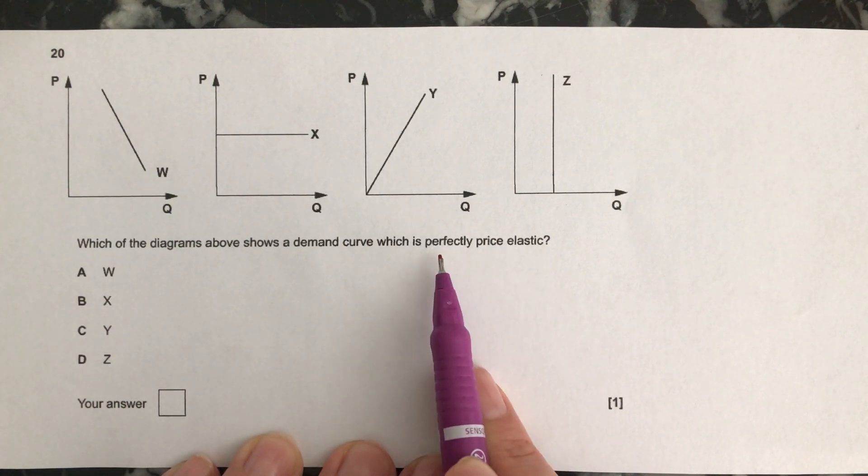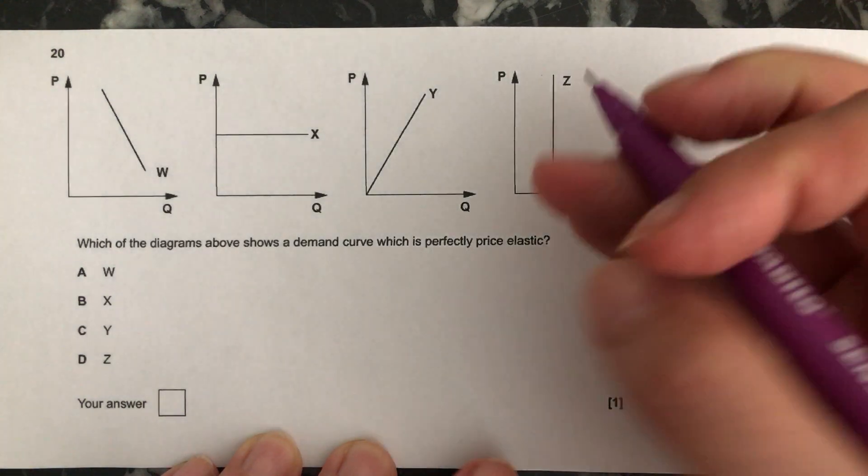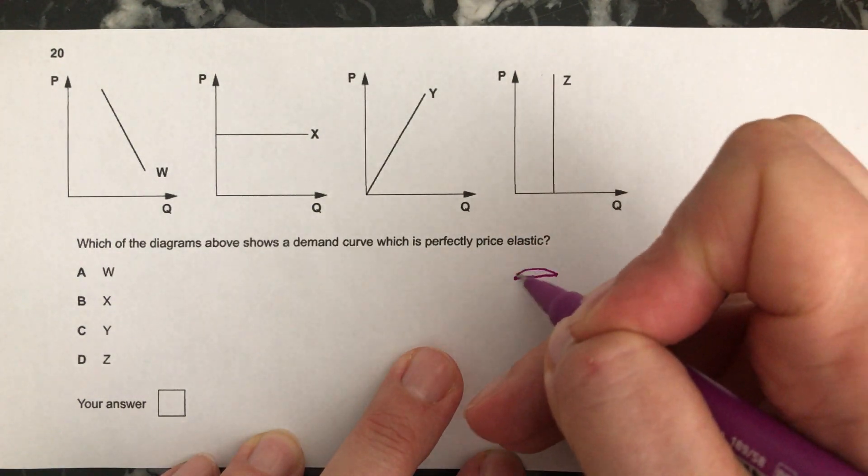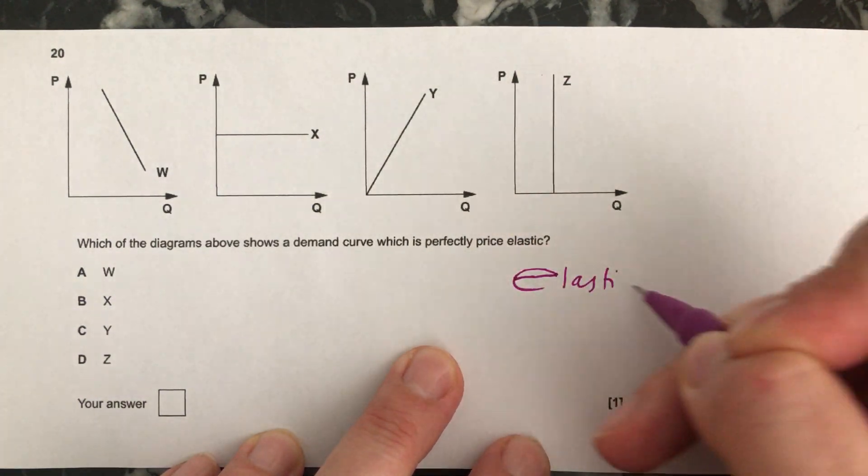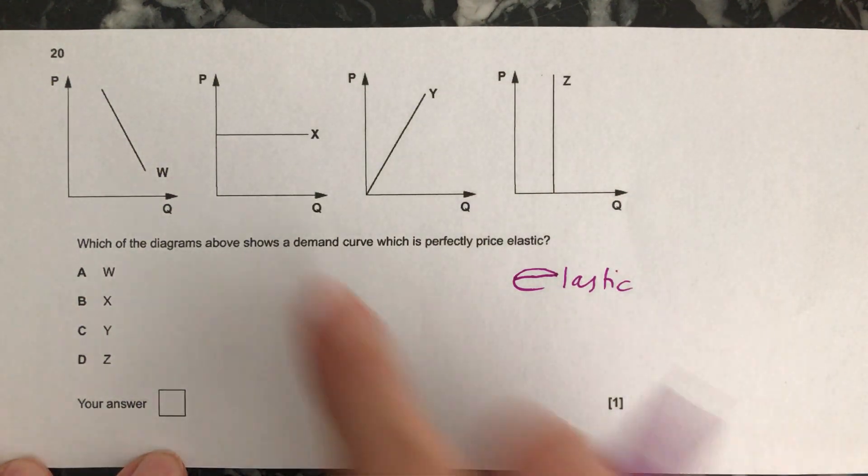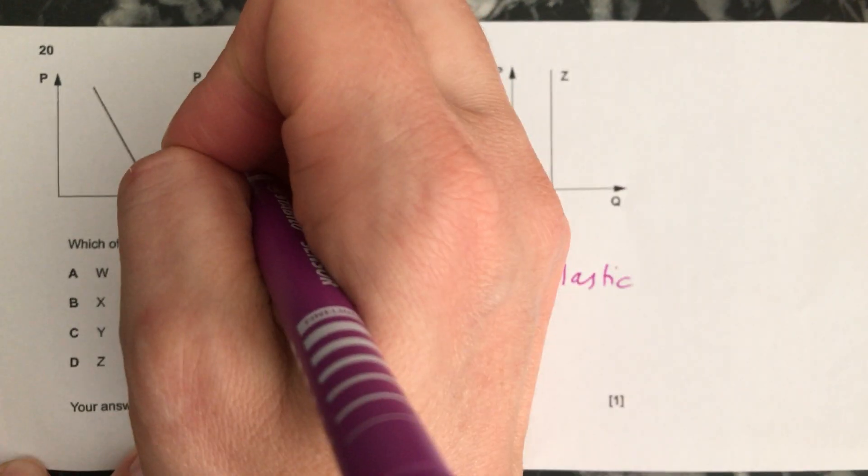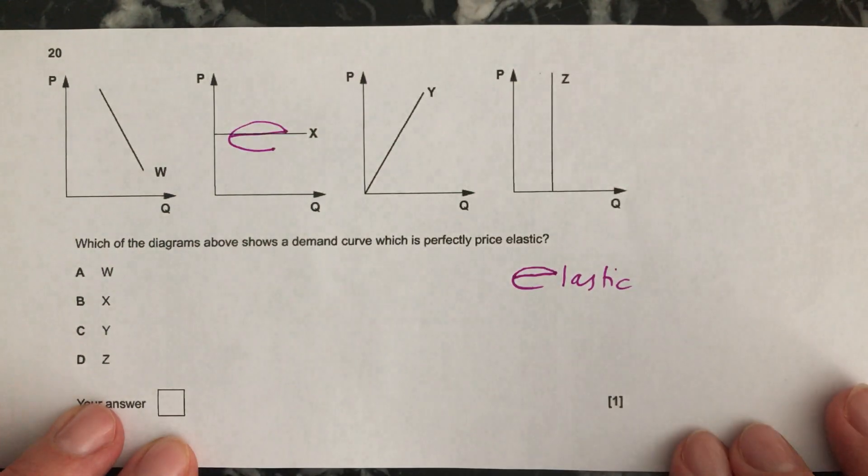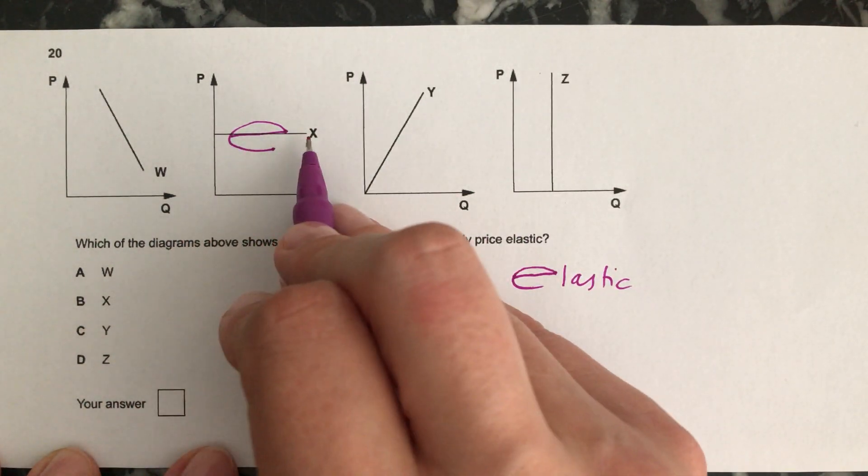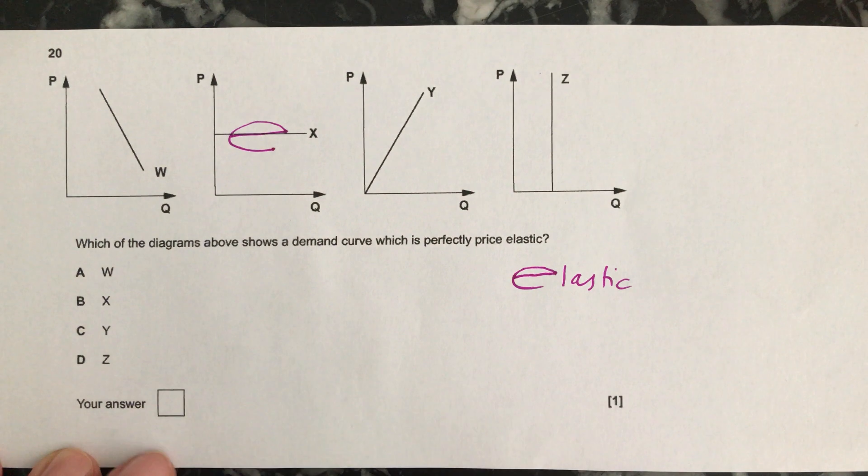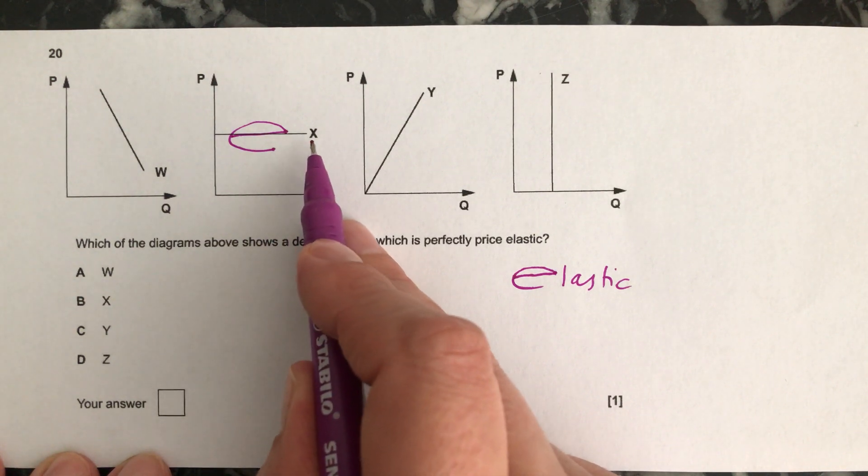Now perfectly price elastic, the way to remember this: elastic looks like that and the elastic one is this one. E for elastic and it's perfectly elastic because it's completely horizontal and so the other ones are not perfectly price elastic so we know that this is the right one which is X.